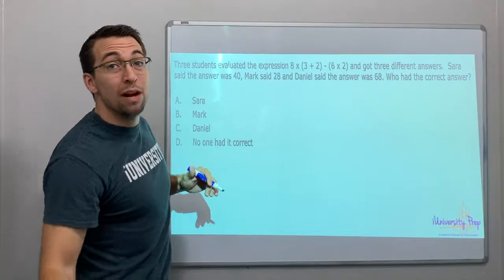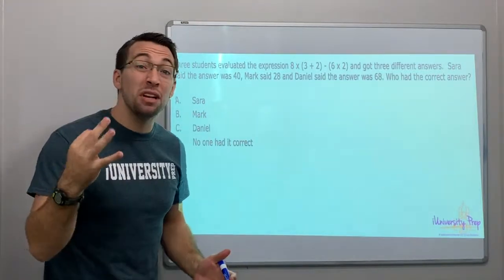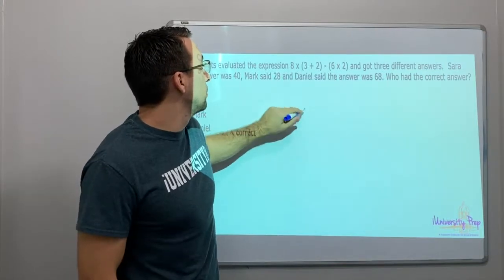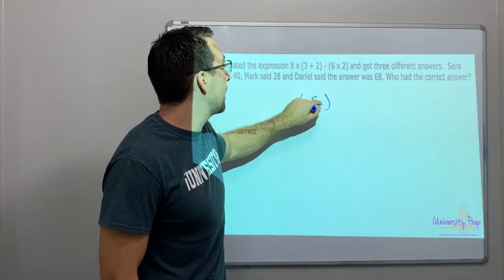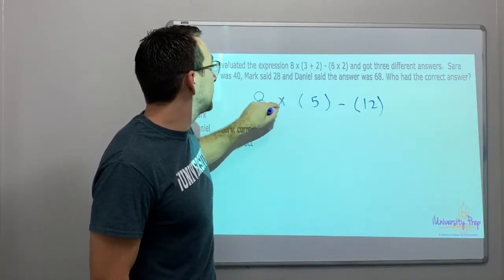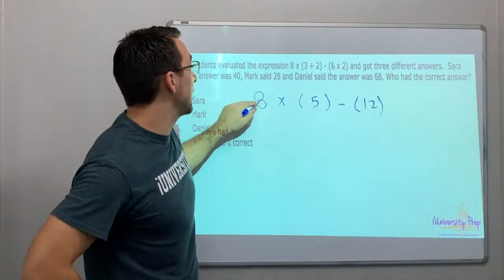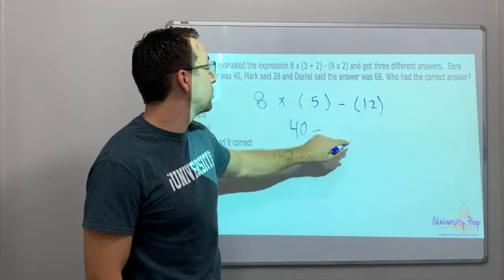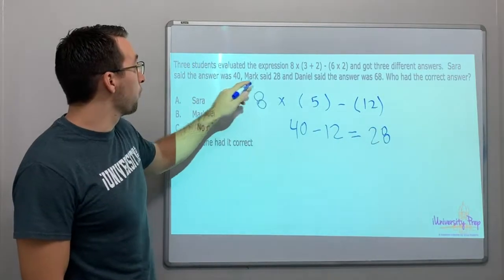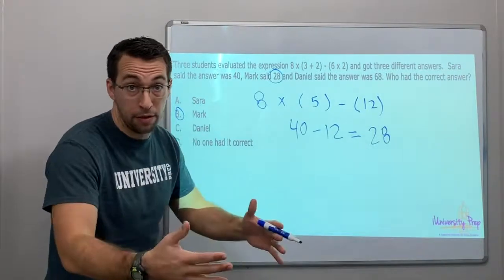Three students evaluated the expression 8 times (3 plus 2) minus 6 times 2 and got three different answers: Sarah said 40, Mark said 28, Daniel said 16. Let's solve it — parentheses first: 3 plus 2 is 5. Then 8 times 5 is 40, and 6 times 2 is 12. So 40 minus 12 equals 28. Mark is correct! You do parentheses first, then multiply and divide, then add and subtract.